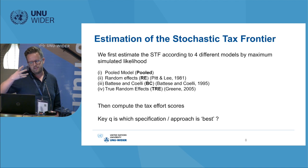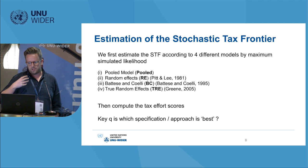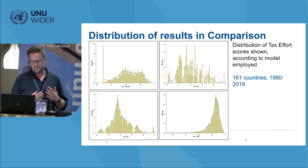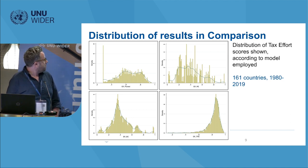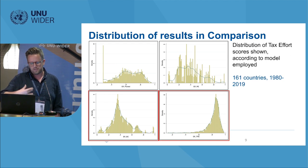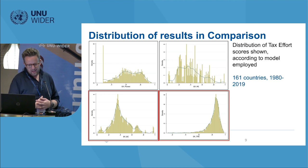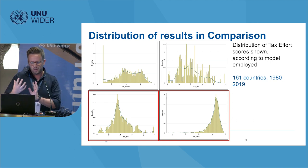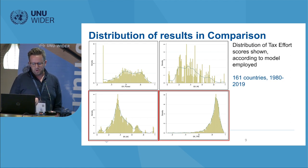The next slide shows the distribution of all scores that came out of our model for 160 countries between about 1980 and 2019, according to those four different methods. From left to right, top to bottom: the pooled model, the random effects model, the Battese-Coelli model, and the true random effects model. Focusing on the two at the bottom — the bottom-left is the methodology used in quite a lot of literature up until now, and you can see the estimates of tax effort scores are quite broad, with a median around 0.35–0.37. The true random effects approach stands out as having quite a tight variance and being skewed much further to the higher end of the scale, with a median at about 0.83–0.84.